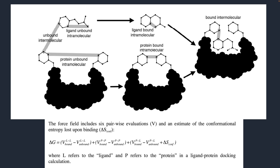AutoDock4.2 uses a semi-empirical free energy force field to evaluate conformations during the docking solutions. Semi-empirical means some of the values or energies are taken from experimental values — those are empirical values from different manuscripts and experiments. The semi part comes from the hypothesis of what we are doing: whenever we do a docking analysis, it compares your binding free energies with experimental binding energies and combines them to give a predicted value. This is what is called semi-empirical in nature, similar to GROMACS which is also based on semi-empirical force fields.